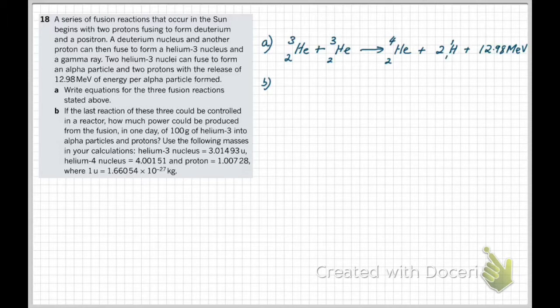We have two helium-3 nuclei fusing to produce an alpha particle or a helium-4 nucleus, plus two protons, and per fusion we also have 12.98 mega electron volts of energy being liberated. Now we're given this information so there is no need to calculate the mass defect in order to determine energies for this problem.